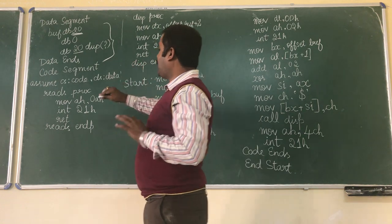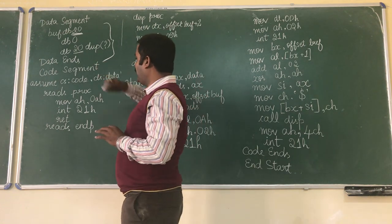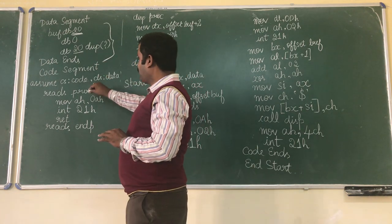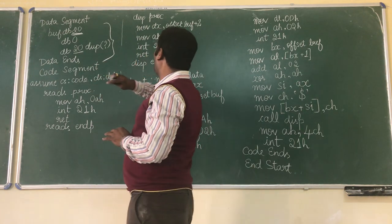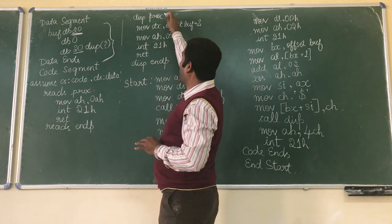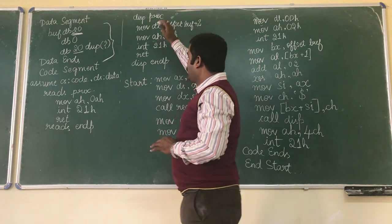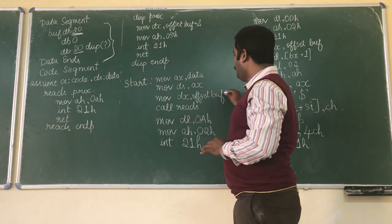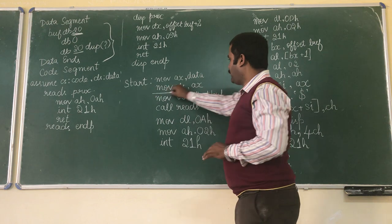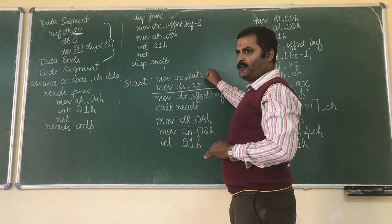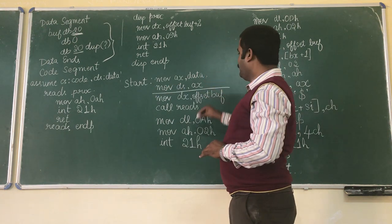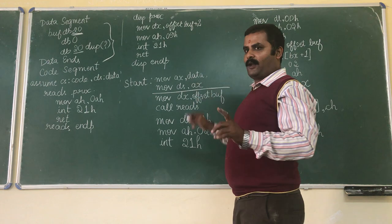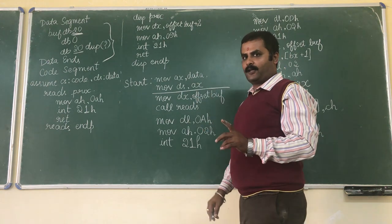The main program starts from the code segment. Here the read procedure will be done and the display procedure will be done. Then my program starts from this line — initializing the data segment is done here. This is the line where my actual program starts for this particular program.